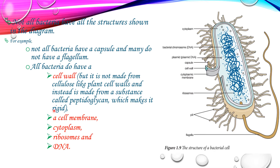The bacterial cell wall is not made from cellulose like plant cellulose. Instead it is made from a substance called peptidoglycan, which makes the cell wall very rigid. In addition to the cell wall, a bacterial cell also has a cell membrane, cytoplasm, ribosomes, and DNA. These are the parts found in a general type of bacterial cell.